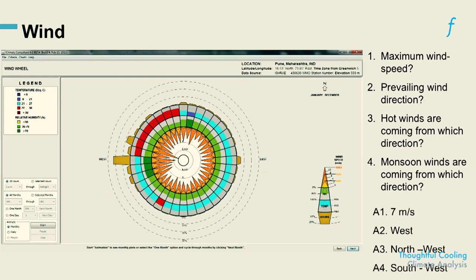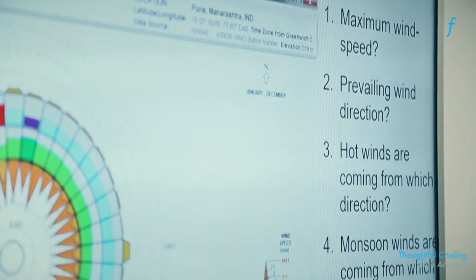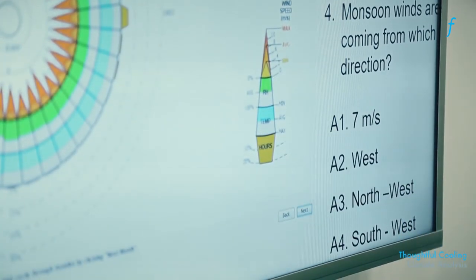Okay, so here are the answers to these questions. Maximum wind speed prevailing direction—so here prevailing direction as you can tell is west, because this is where you see most of the wind coming from.